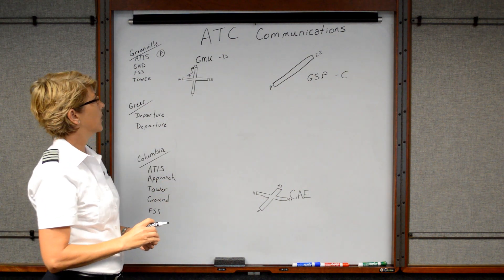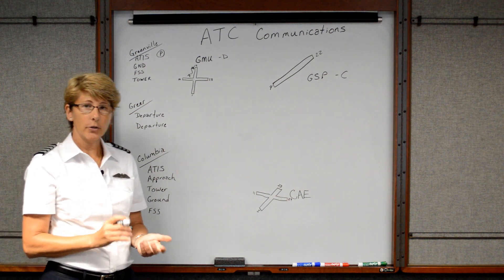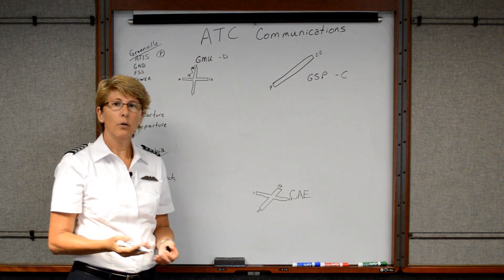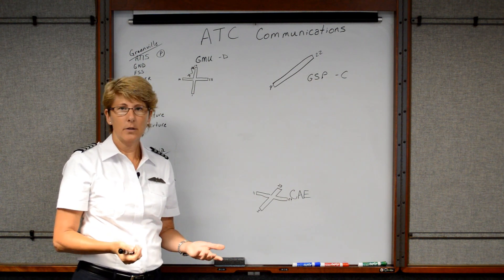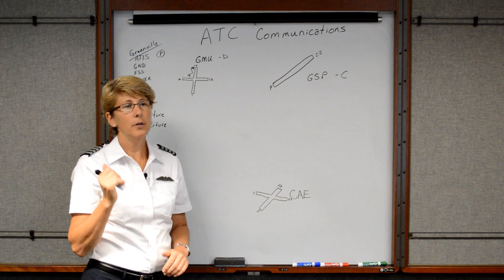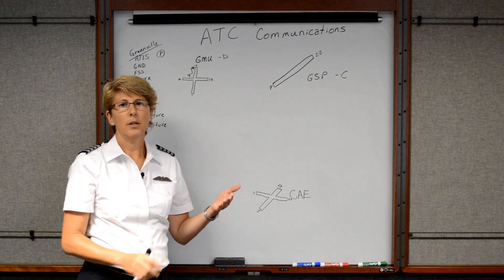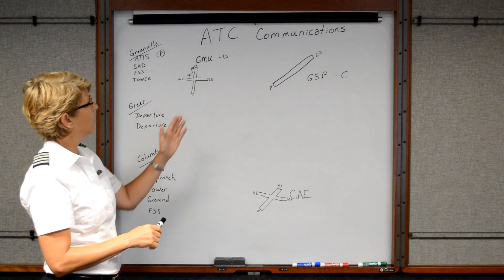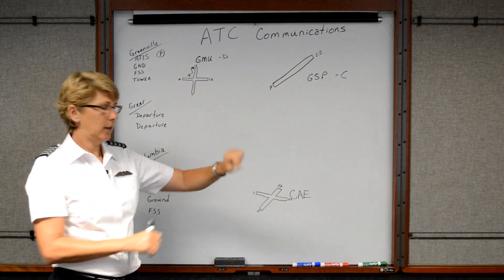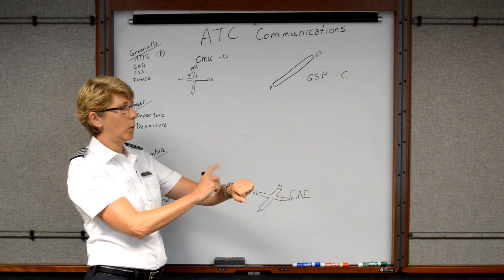The next radio communication we would make would be to contact the flight service station to activate or open our VFR flight plan. And we had discussed earlier different ways to do that. We could do it via our cell phone, or we could contact the flight service station on one of the frequency box using our comm radio in the aircraft. So now we'll have our flight plan activated, and the timer's set now for one hour.